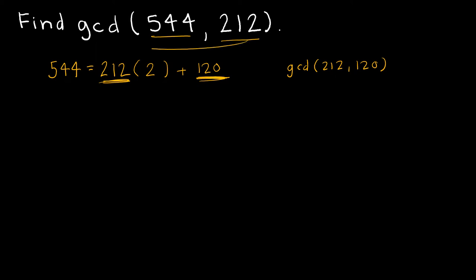And notice the 212 just carried over. So now we're going to start with 212 and say 212 is equal to 120 times some number plus some number. And in this case, 212 would be equal to 120 times 1 plus 92, which means this GCD is the same as the GCD of 120 and 92.